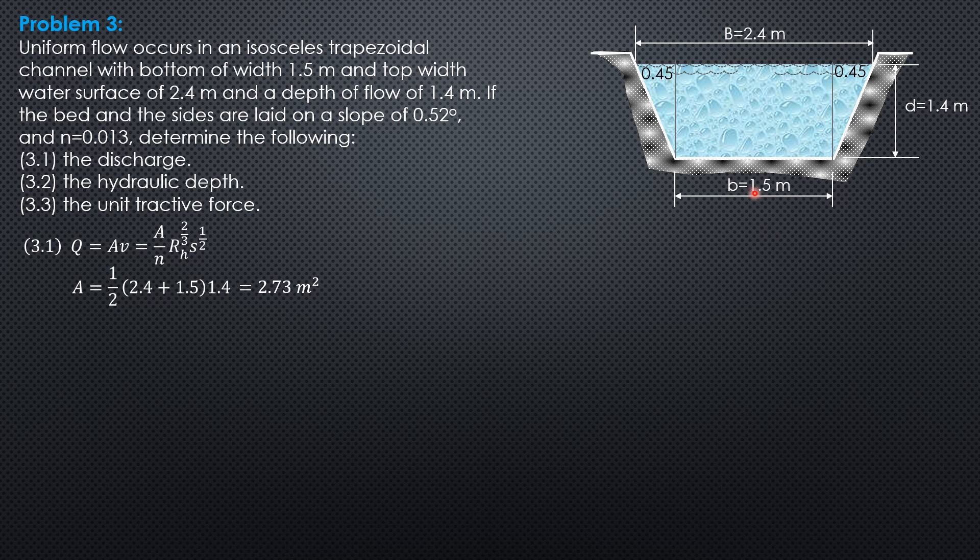The wetted perimeter is 1.5 plus 2 times square root of 0.45 squared plus 1.4 squared. This is 0.45, 2.4 minus 1.5, 0.9 divided by 2, so that's why it's 0.45 meters. Wetted perimeter is 4.441 meters.